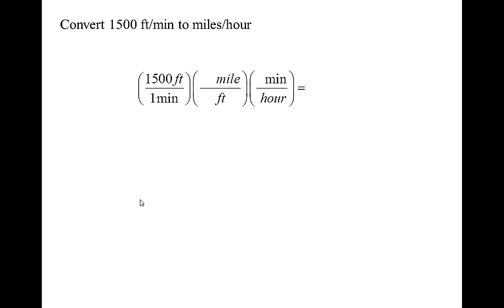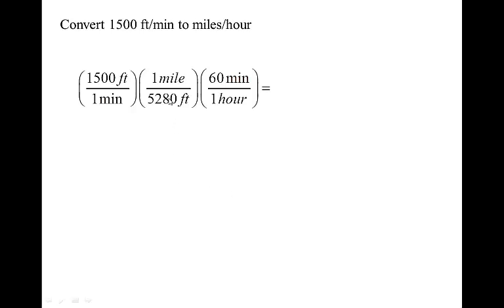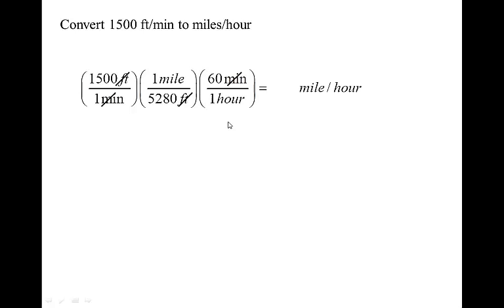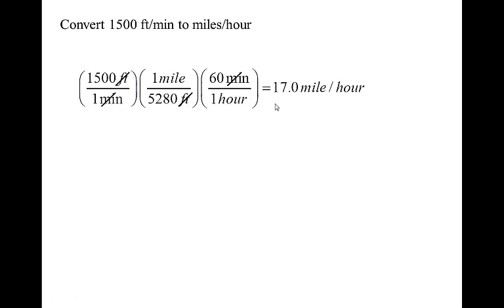This is the last piece of one of the homework problems: converting feet per minute to miles per hour. I don't memorize how to do this — I let the units do the talking. Set up 1,500 feet per one minute, then put feet and minutes opposite to cancel them out. There are 5,280 feet in a mile and 60 minutes in an hour — the feet and minutes cancel, leaving miles per hour, which comes out to about 17 miles per hour. Let the units do the talking; don't try to memorize how to convert units. You probably learned this in chemistry.